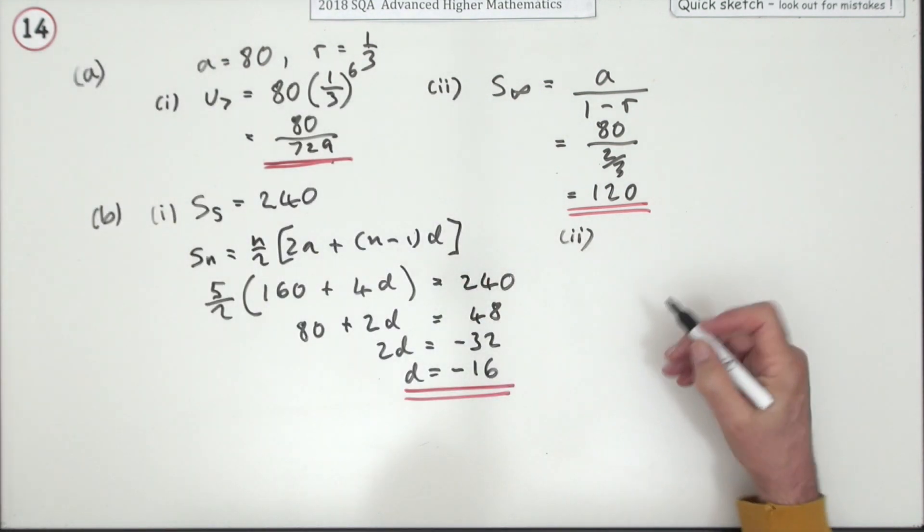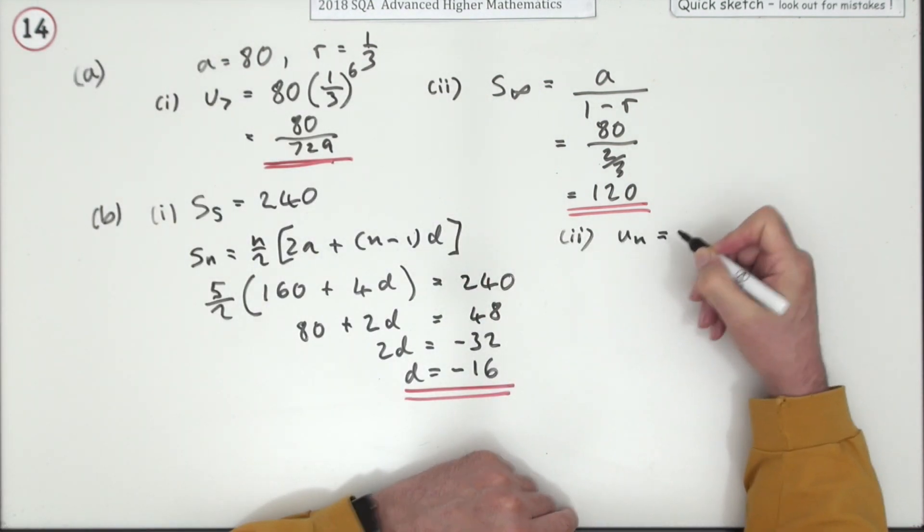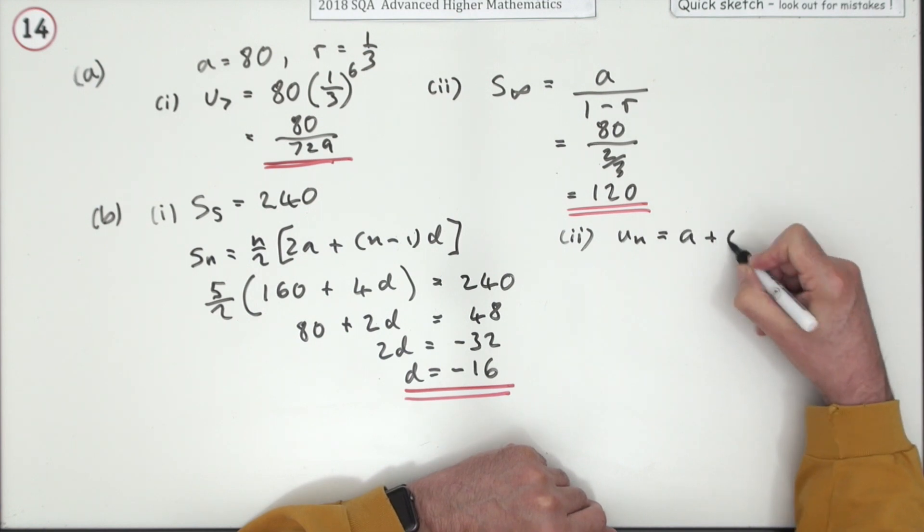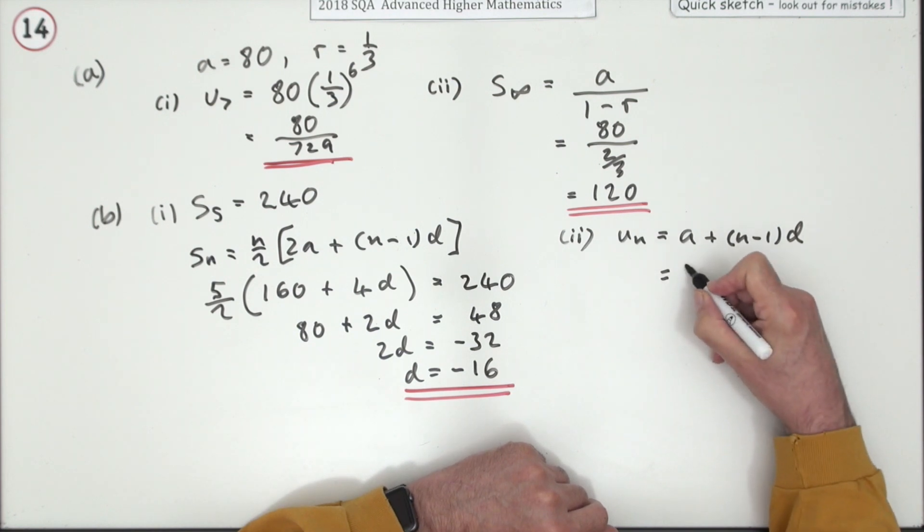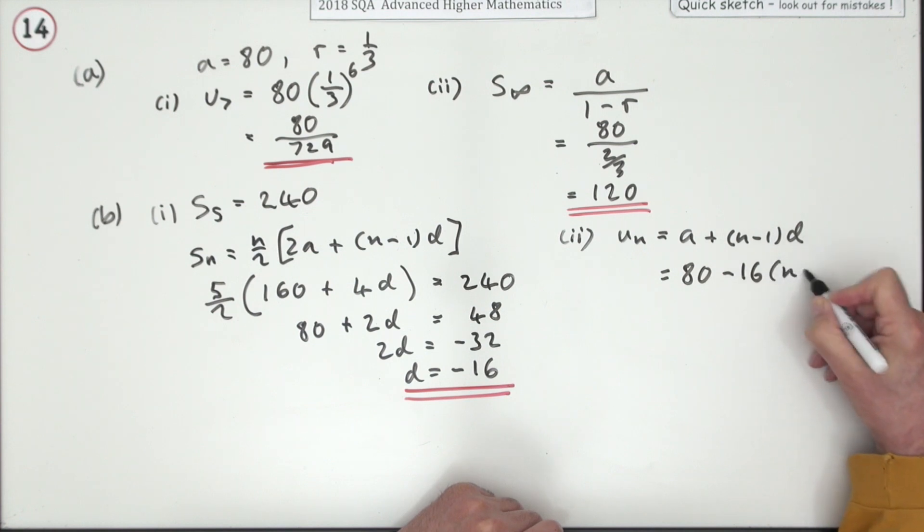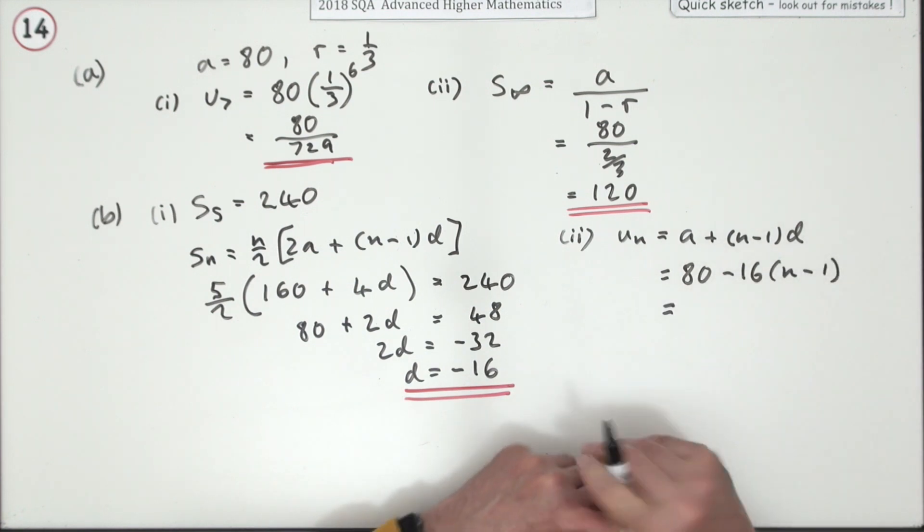Part 2. Find and simplify an expression for the nth term. Well, to get the nth term in an arithmetic sequence, you start with the first term and you add n minus 1, lots of the common difference. So, just put in the figures. So, that'll be 80, and the common difference is negative 16. So, it'll be minus 16 times n minus 1. So, that's the expression.